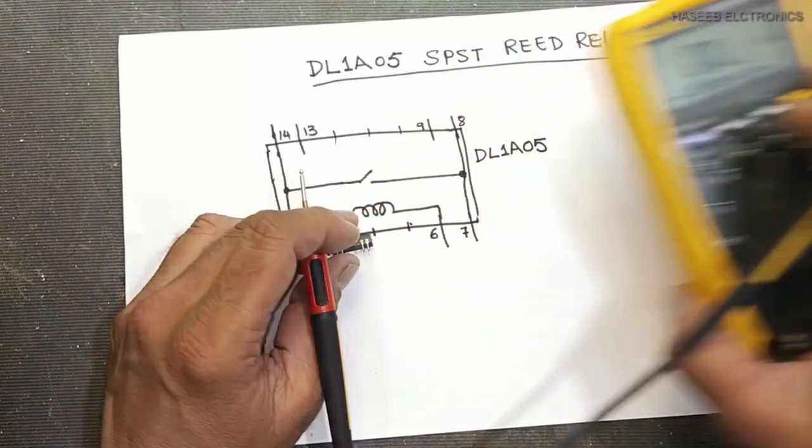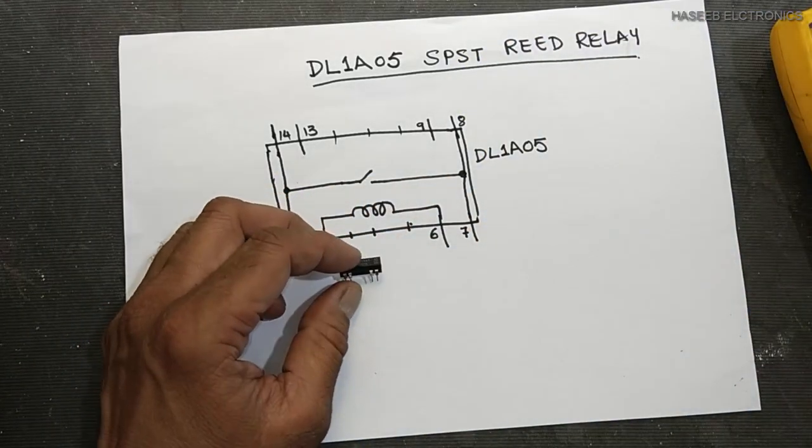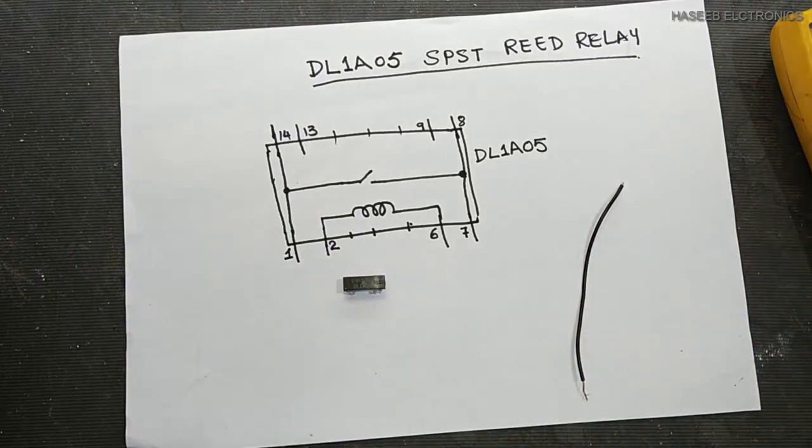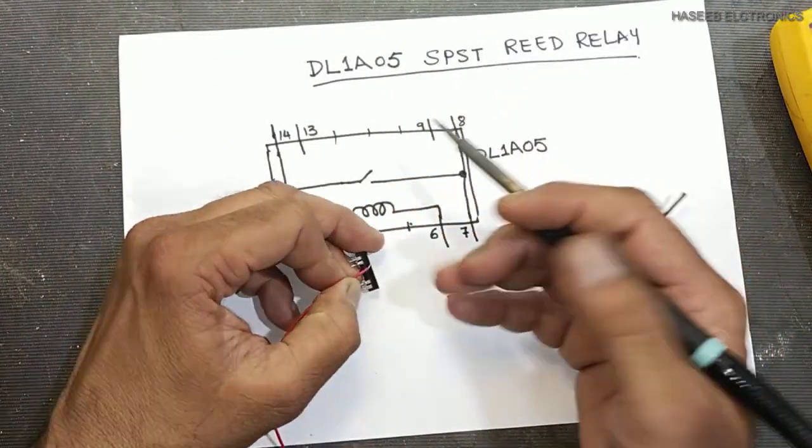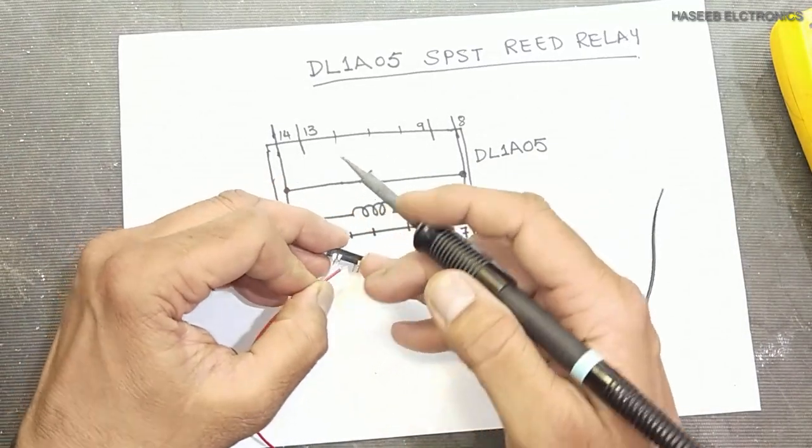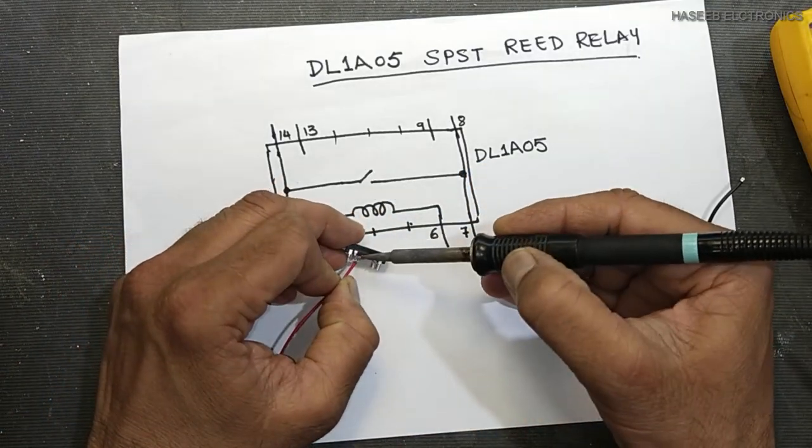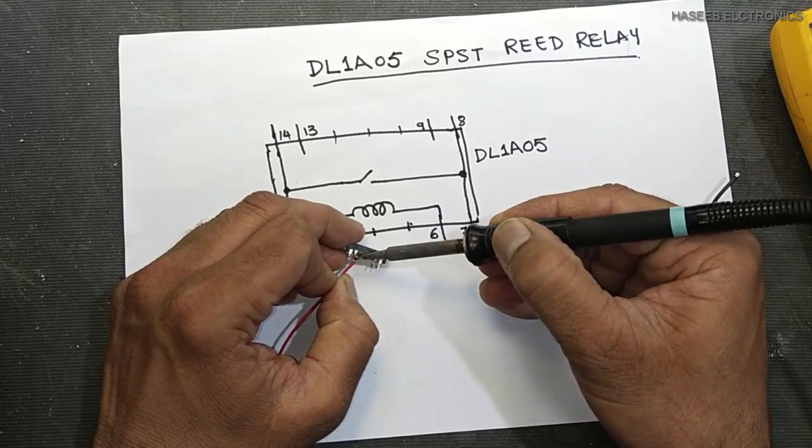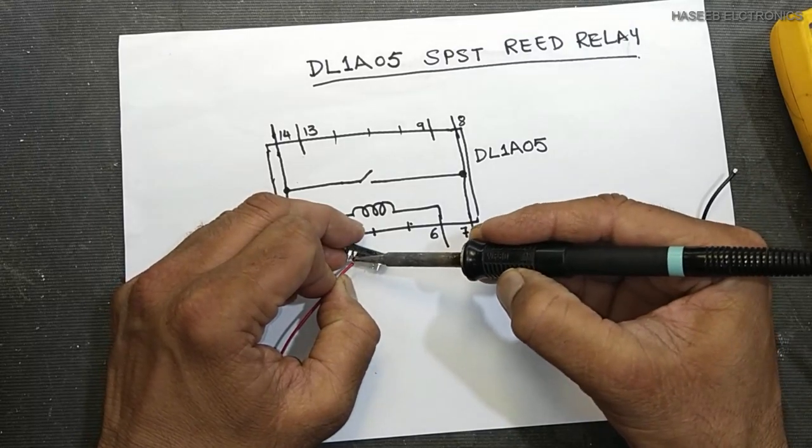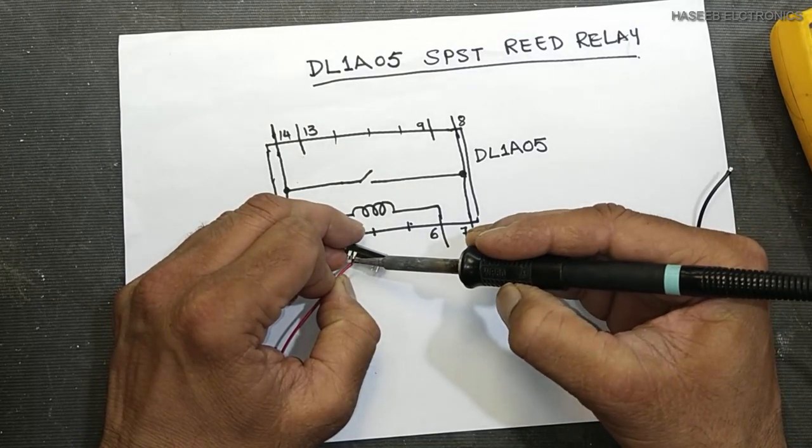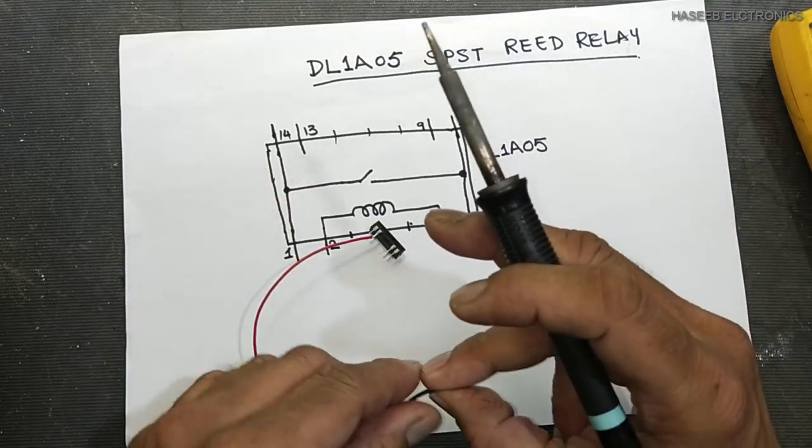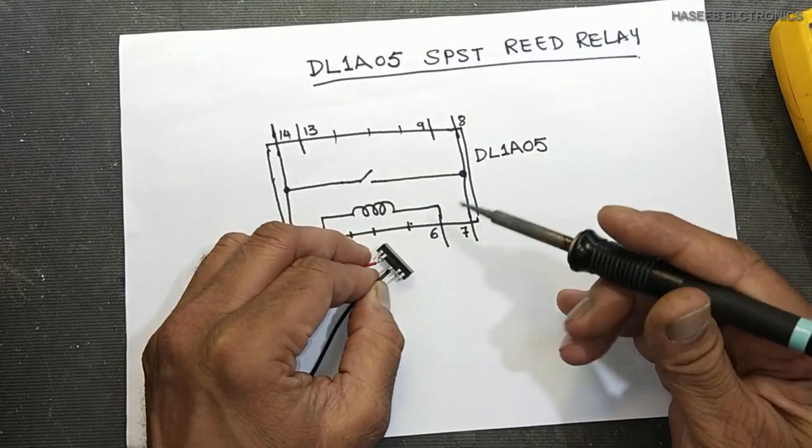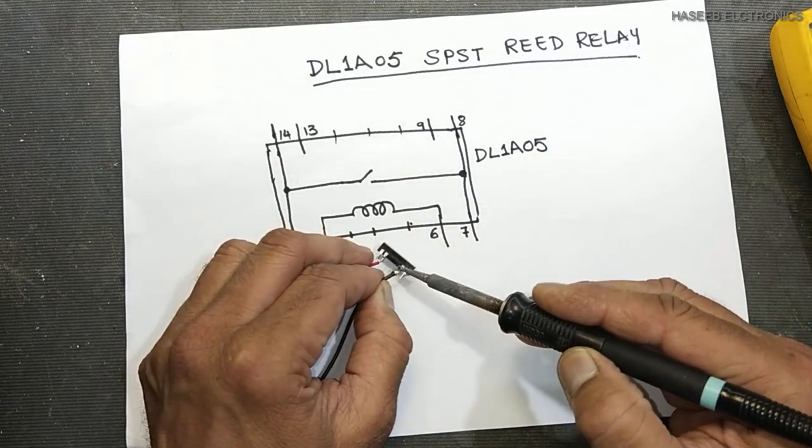Now how will we test it? I will connect 5 volts to pin number 2. Most of the time it is used in test equipment. Pin number 2, pin number 6 will connect to ground voltage, 5 volts.